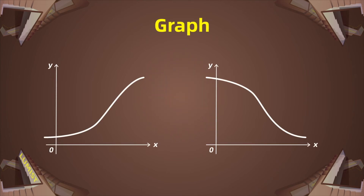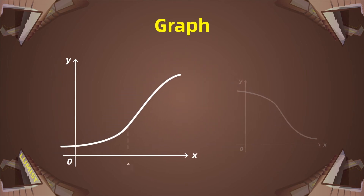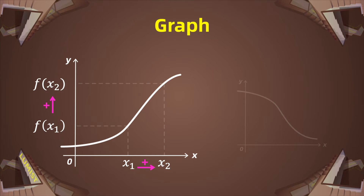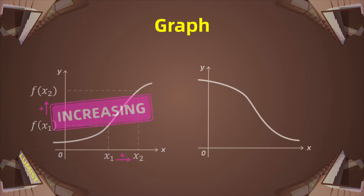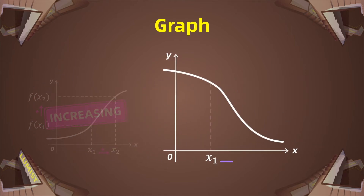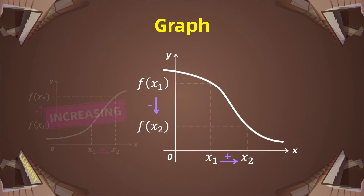If you pay attention to the graph, as you may see on the first graph, x1 is less than x2 and f(x1) is less than f(x2), meaning that this function is increasing. But in the next example, x1 is less than x2 and f(x1) is greater than f(x2), meaning that this function is decreasing.